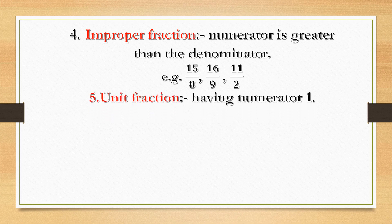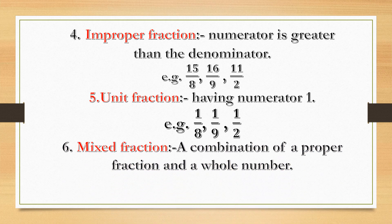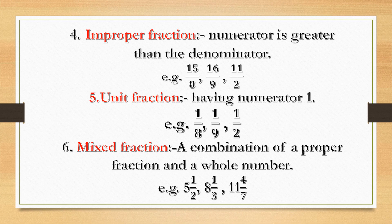Unit fraction: fractions having numerator one — like one by eight, one by nine, one by two. Mixed fraction: a combination of a proper fraction and a whole number. For example, five and one by two — five is the whole number and one by two is the proper fraction. Eight and one by three, eleven and four by seven — these are all mixed fractions.